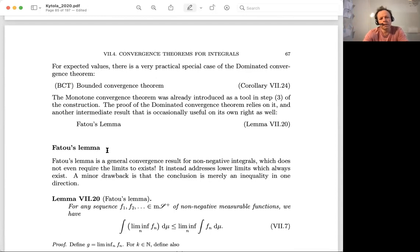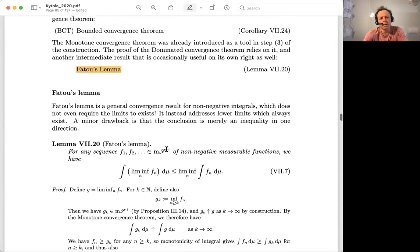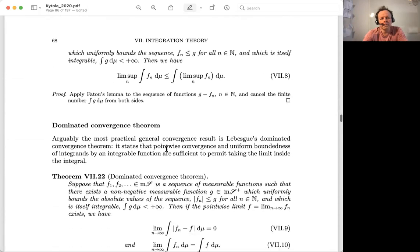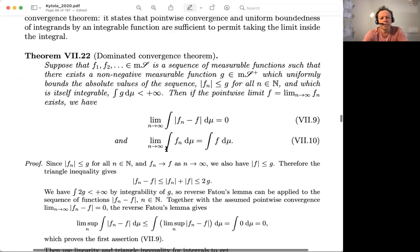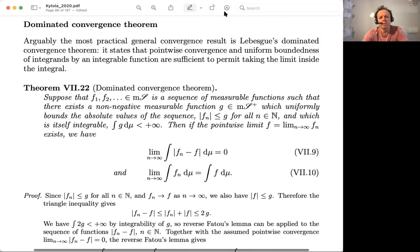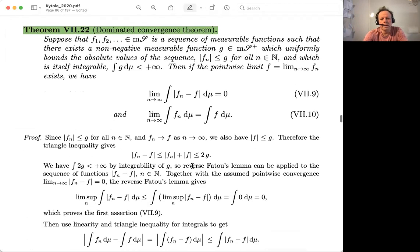There are some other versions of these, different variants of these conditions if you want to do upper or lower limits or something. That's what's called FAT2 here. But let's not worry about this. The dominated convergence theorem is here. Let's read the statement.